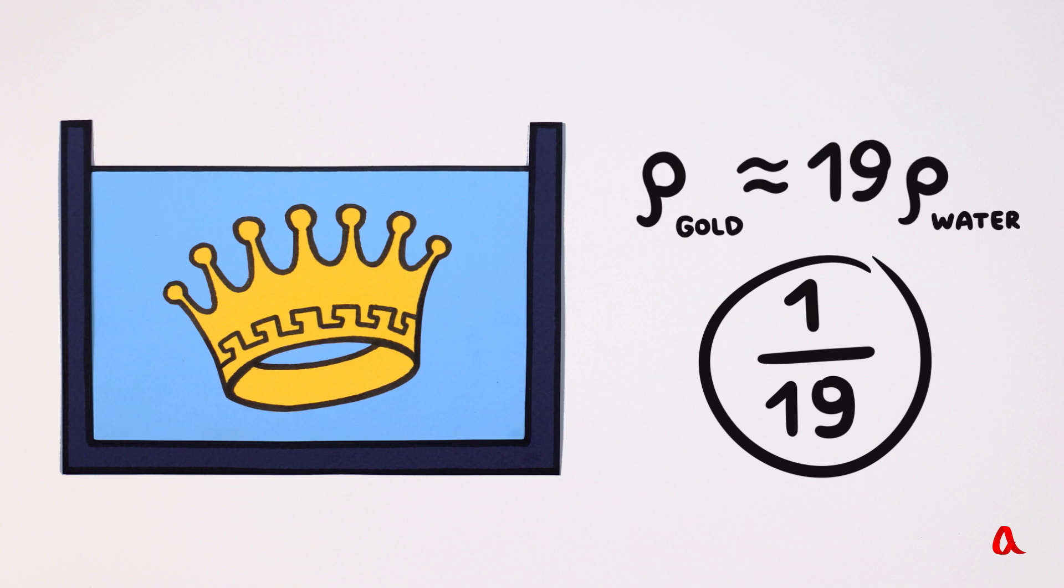If there is some silver present, the density of the alloy will be smaller and the weight loss will be greater.